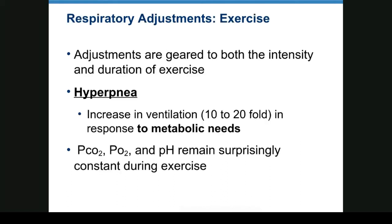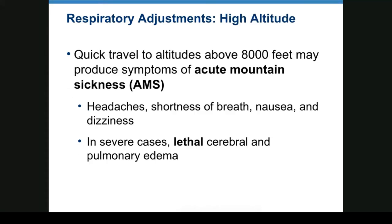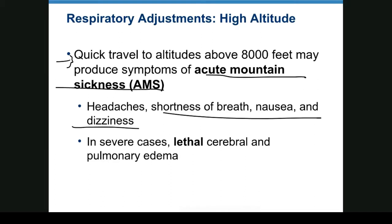During exercise, ventilation increases — called hyperpnea — perhaps 10 to 20-fold. Oxygen, CO2, and pH remain relatively constant because you're breathing harder to keep them constant. At high altitudes, especially over 8,000 feet, one can get acute mountain sickness: headaches, shortness of breath, nausea, dizziness, and in severe cases, cerebral or pulmonary edema and death.